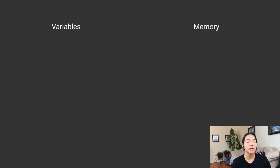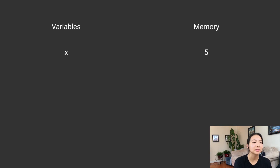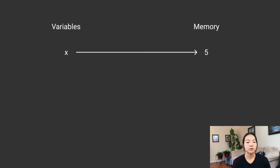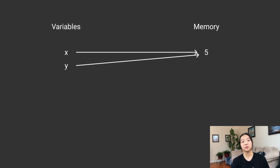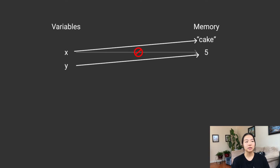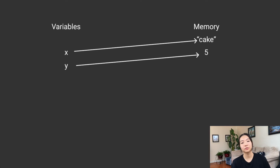Let's talk a little bit about what the computer's thinking when you're trying to assign variables. When you declare and assign a variable like x equals five, basically you're telling the computer to store a value somewhere in memory, and then have that variable name x point to that value five. You can also do y equals x, and so then y points to five. When we reassign the variable name by assigning it to a new value — such as x equals cake — I'm actually replacing the pointer for x to point to a different value in memory. So x is no longer five, but y is still pointing to five.